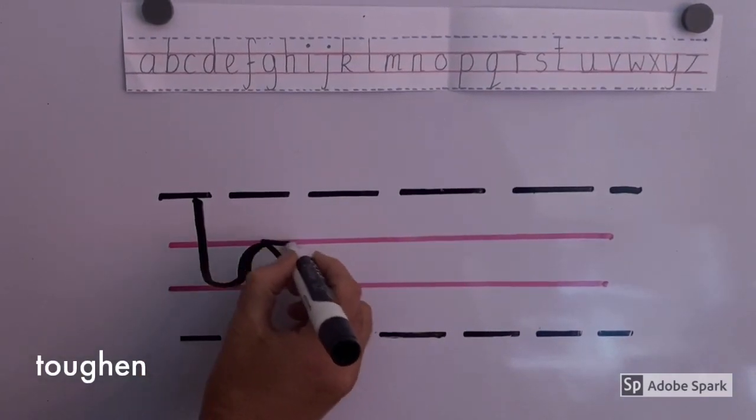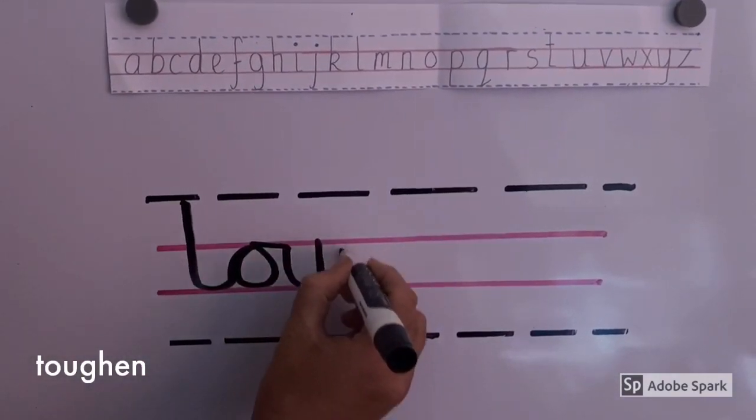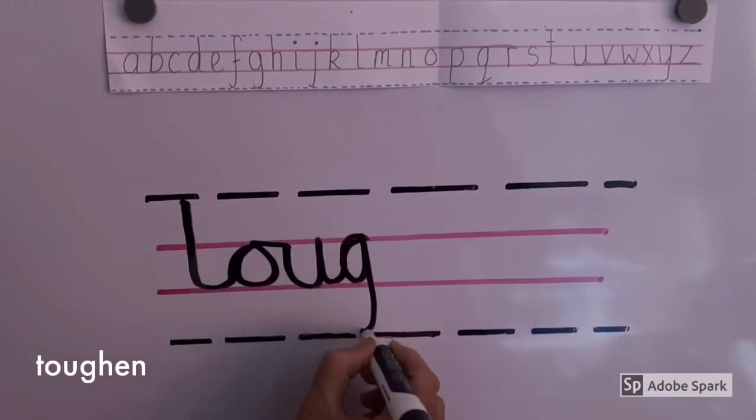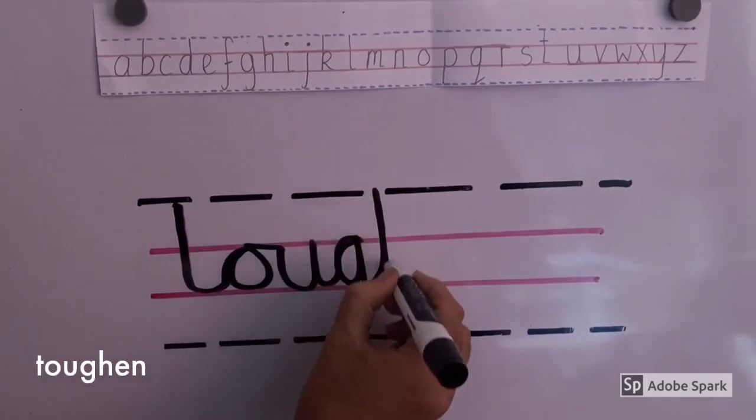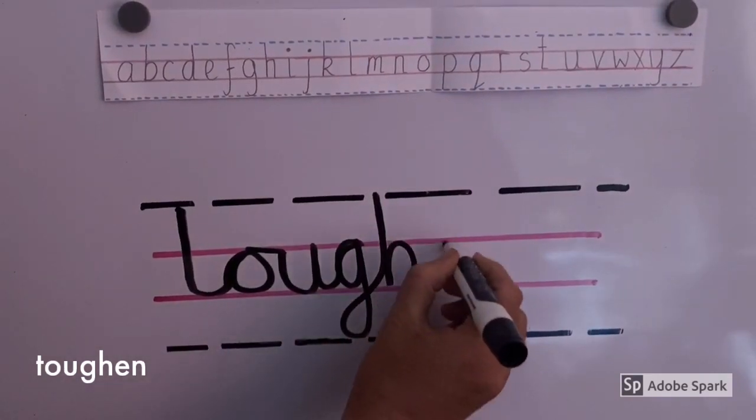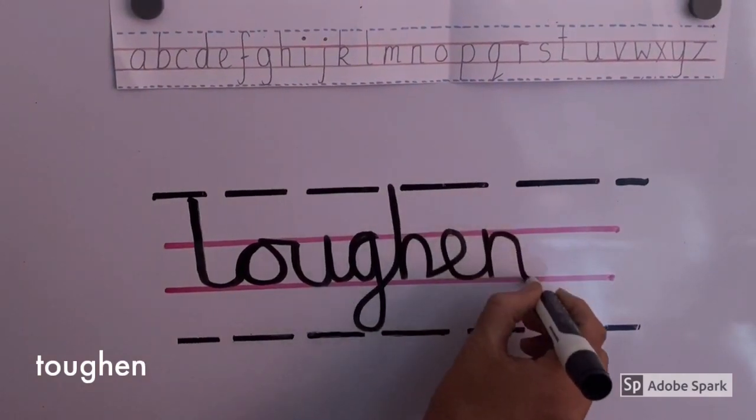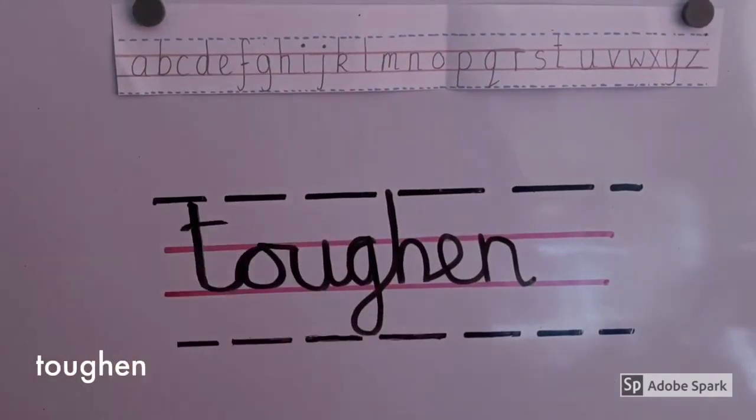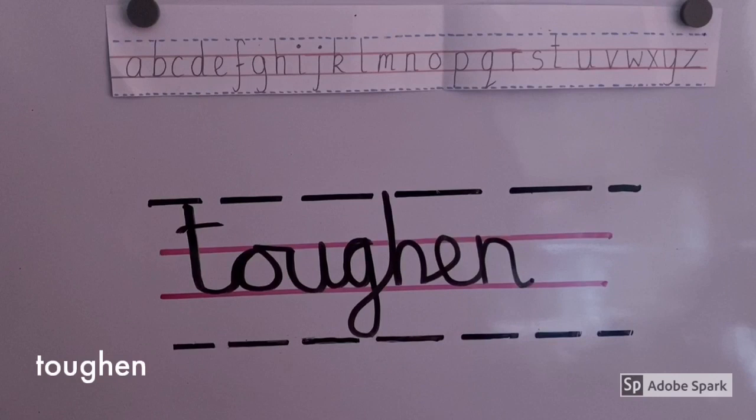And the last word is toughen. T, O, U, G, H, E, N. Toughen. Toughen means to become stronger or more resilient. Toughen.